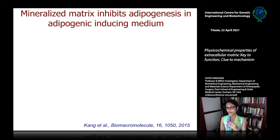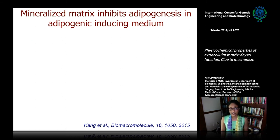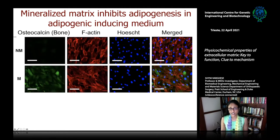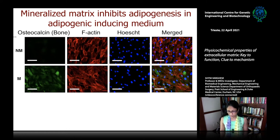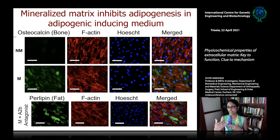We also looked at the effect of the A2B pathway on fat formation, or adipogenesis. We took the mineralized material, cultured cells in adipogenic-inducing medium — giving two competing signals: the material pushing osteoblast differentiation and the medium pushing fat formation. Cells on non-mineralized material and coverslip are positive for perilipin — they are forming fat. Cells on mineralized material show osteocalcin staining — they are differentiating into osteoblasts. When we block the A2B receptor, cells on mineralized material undergo fat formation. This tells us that activation of A2B receptor promotes bone formation, and its inhibition leads to fat formation.